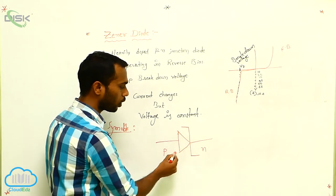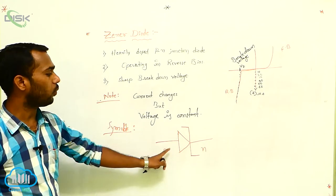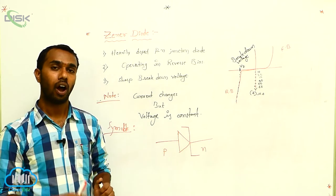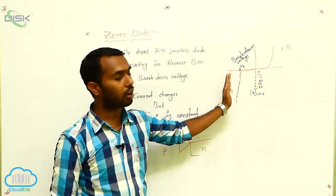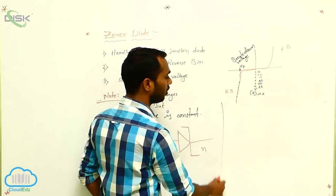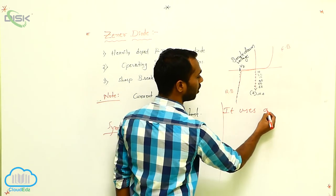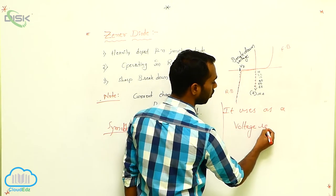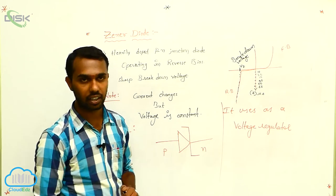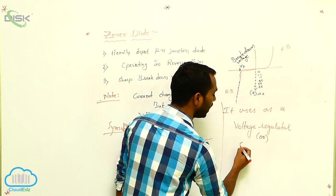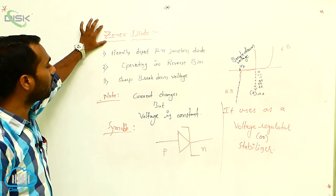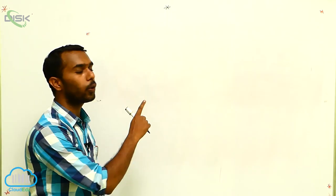What we observe is that the current value is changing but the voltage value is constant. At a particular constant voltage, we can get different, different currents. Using this concept, the Zener diode is used as a voltage regulator — that is, a stabilizer. In our home, we use stabilizers for TVs and refrigerators. The Zener diode is used as a voltage stabilizer. Now we have to know how this Zener diode is used as a voltage stabilizer.